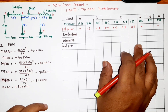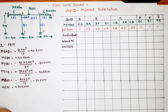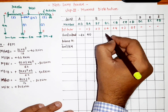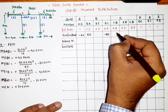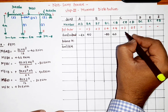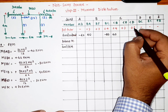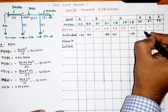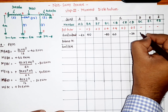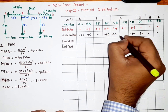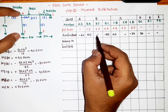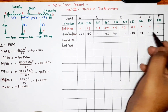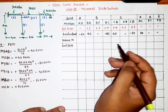We now enter the fixed end moments into the table: AB = -40, BA = +40, BC = -80, CB = +40, CD = -30, DC = +30. For BF, CE, EC, and FB there is no loading so no fixed end moments. The table is now populated with these FEM values.